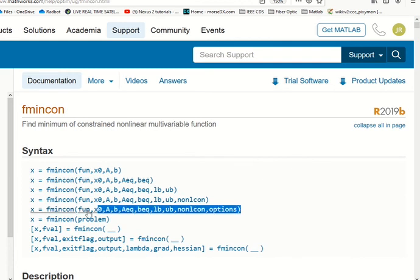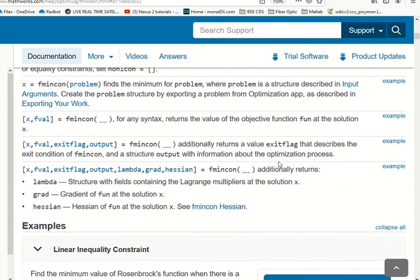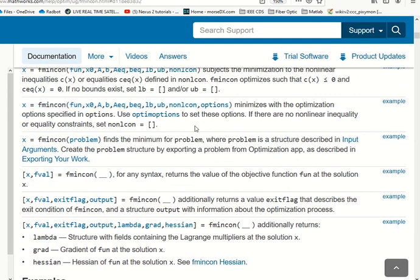We will use this version that's got options. The help explains that the options can be used to set the type of optimization, the algorithm that the optimization uses. We don't have any nonlinear constraints, so we will set nonlincon to empty brackets.